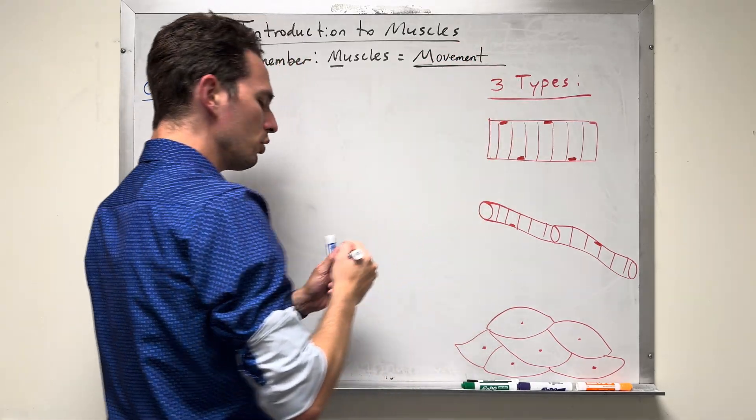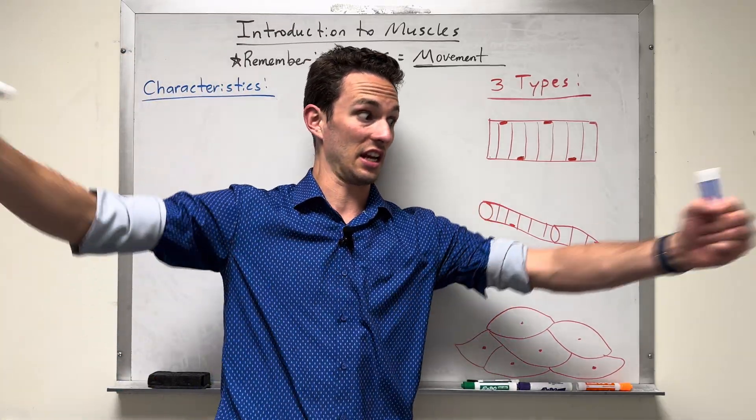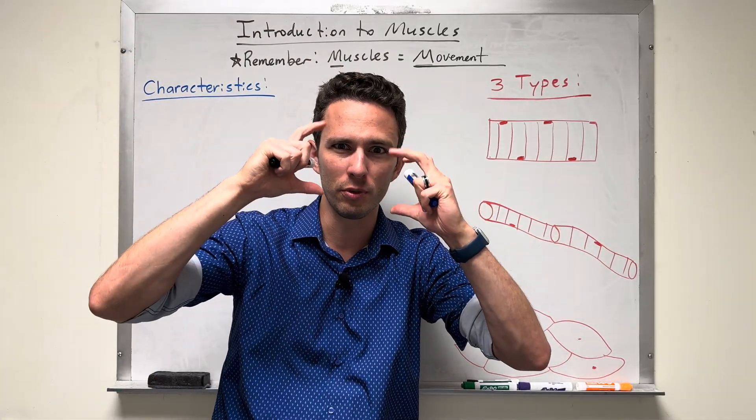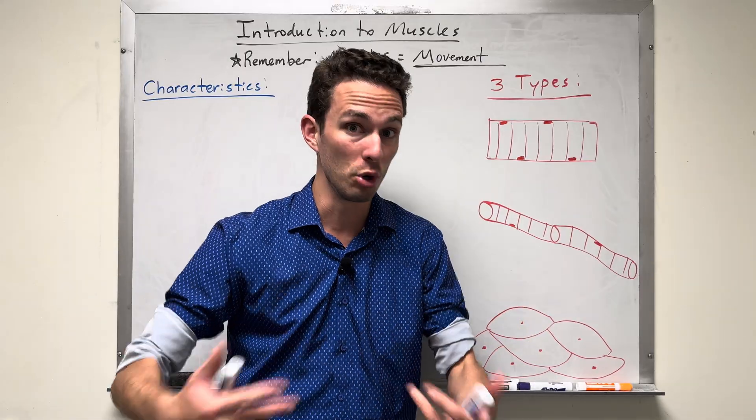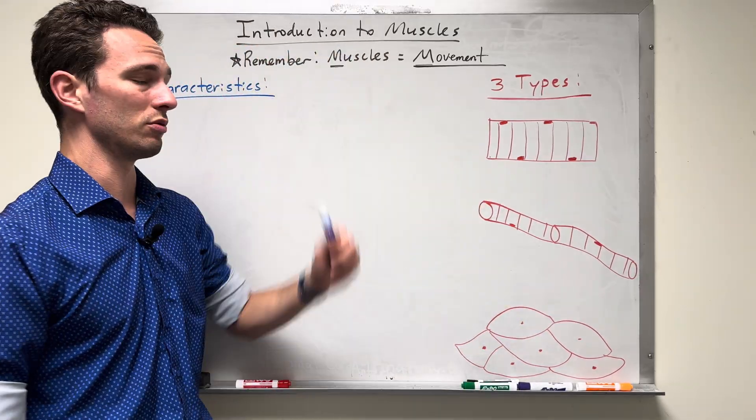If anything moves on your body in a big picture scale, something like your arms or your pupils and your eyes, your intestines, if they're moving, it's because muscular tissue is doing it.